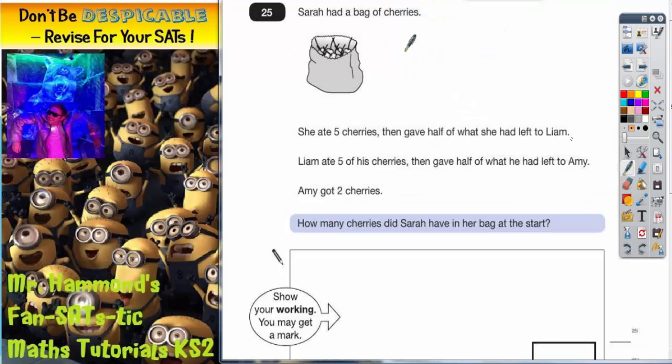Question 25. Sarah's got a bag of cherries. There's the bag of cherries. It says she ate five cherries, then gave half of what she had left to Liam. Then Liam ate five of his cherries, then gave half of what he had left to Amy. Then Amy got two cherries. How many cherries did Sarah have in her bag at the start?